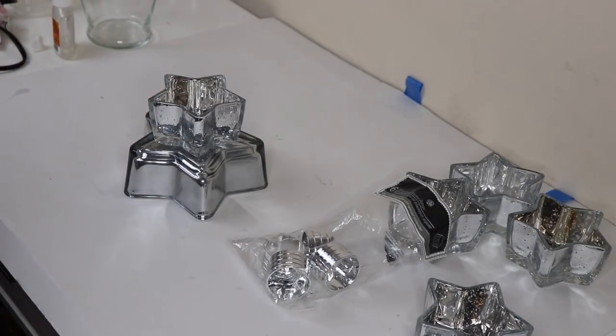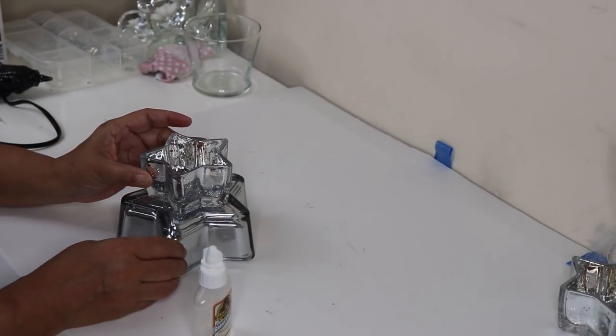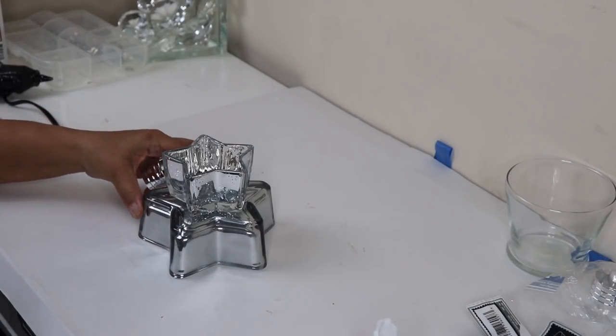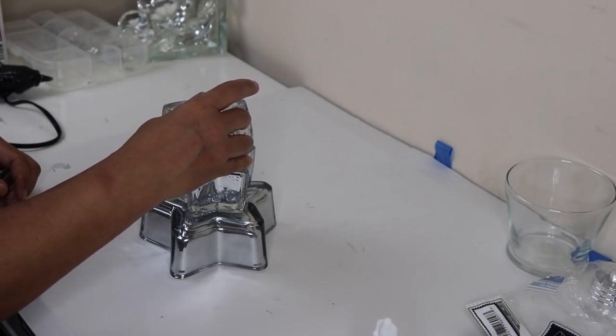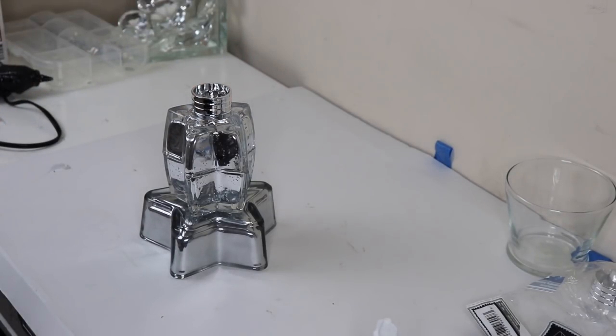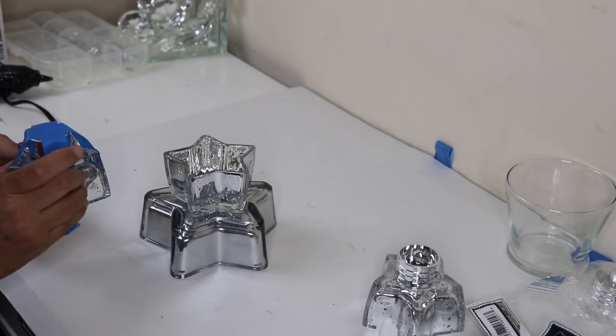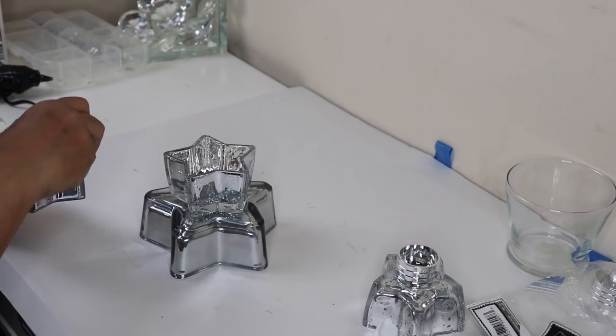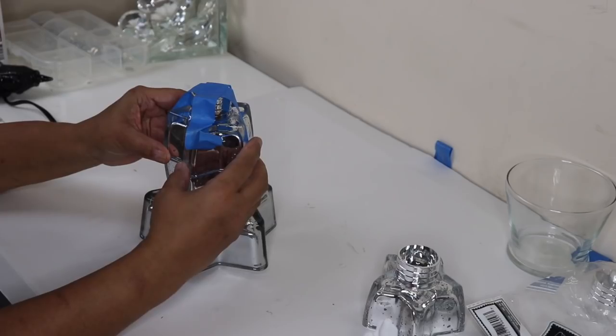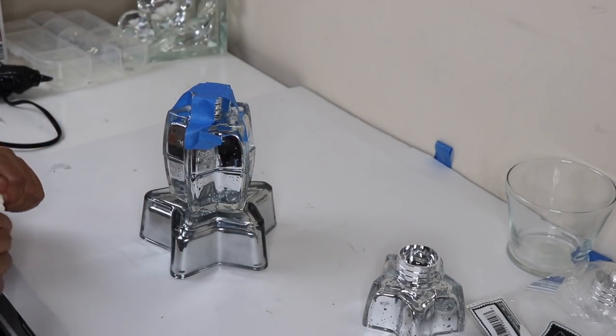After your two pieces have bonded together you're going to take another one of your star tea light holders and a napkin ring and glue them on top. Here I have a tea light holder with the napkin ring already attached so now I'll line both of the tea light holders up and then glue those two separate pieces together.